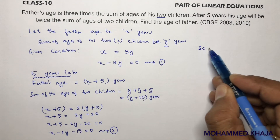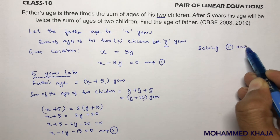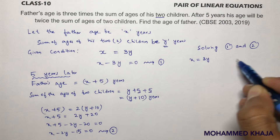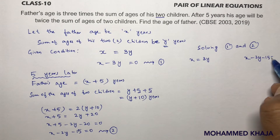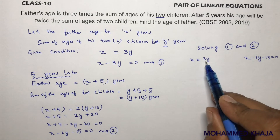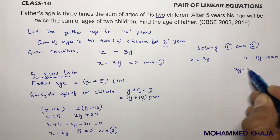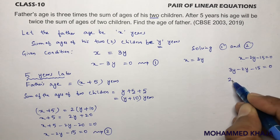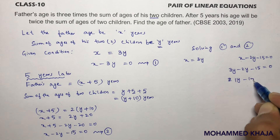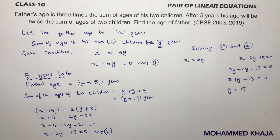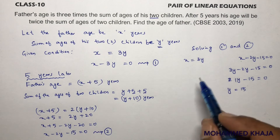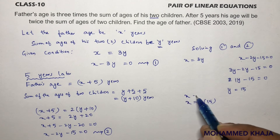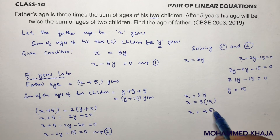Solving equations one and two using substitution, since we directly have x equals three y from equation one. Substituting into equation two: three y minus two y minus fifteen equals zero, so y equals fifteen. The sum of the ages of the two children is fifteen. Now finding father's age: x equals three times fifteen.